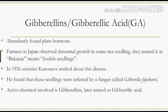The farmers in Japan observed that some rice seedlings grew exceptionally tall — up to 12 to 15 feet. The normal size of the rice plant is 3 to 4 feet, but these plants grew so tall that they could not stand straight and fell down. The farmers called this the Bakanae disease, a Japanese word meaning 'foolish seedlings.'